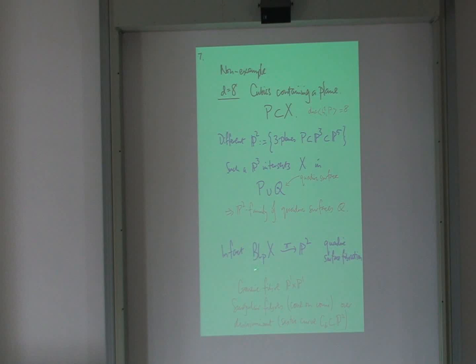So what I have now is a P2 family of quadric surfaces. So really what that gives me is, when you work it out, you blow up the plane. You blow up X in the plane. And if you slide this over P2, this is my P2 family of quadric surfaces. So X blown up in the plane is a quadric surface fibration over P2. And a quadric surface generically is P1 times P1. This is getting closer to looking rational, but not quite. So the fibers are all rational, and the base is rational.